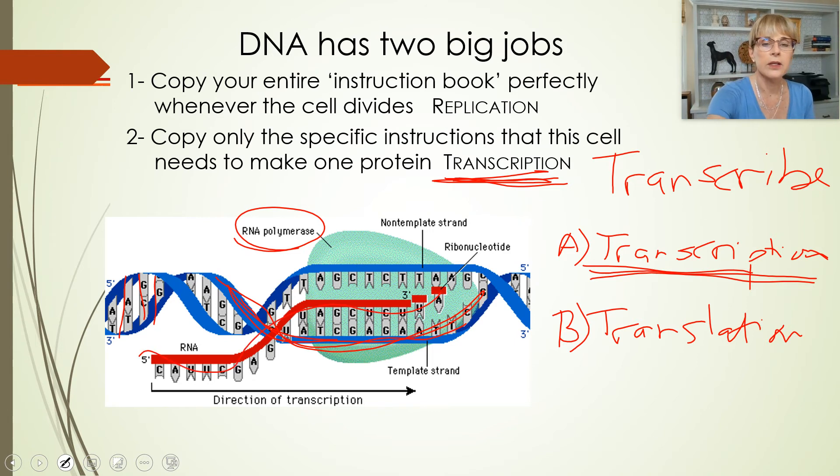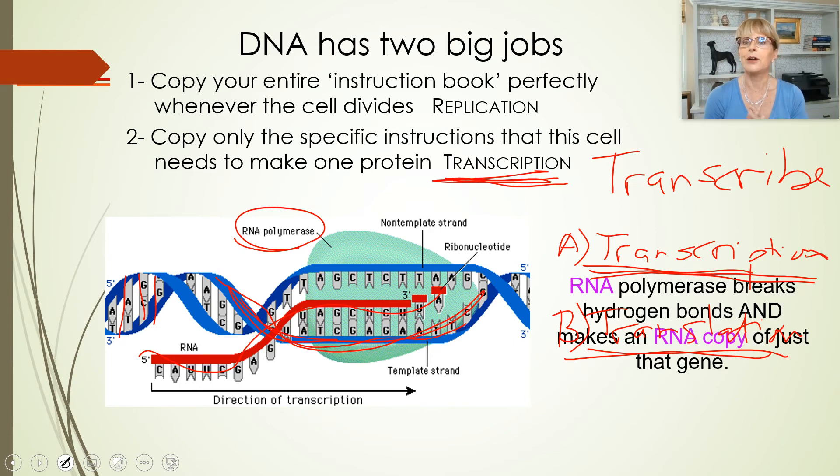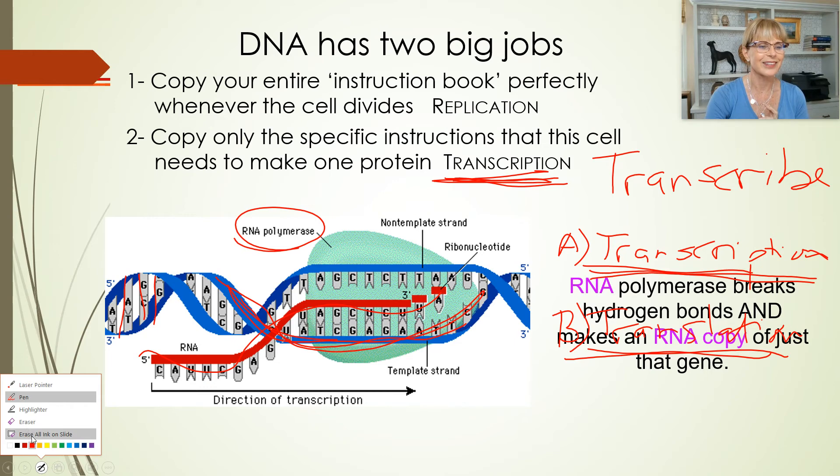So it would start to make eyeball proteins. How would that nucleus instruct that cell to become an eyeball cell? It would transcribe eyeball protein genes. And then this guy is going to leave the nucleus and the ribosomes in the cytoplasm of that cell would translate those eyeball proteins.